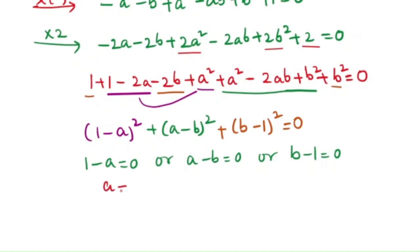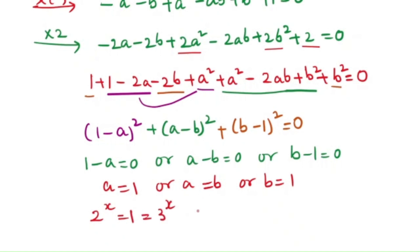This means a = 1, or a = b, or b = 1. Since a = 2^x and b = 3^x, for 2^x = 1, we use the rule that any number to the power 0 is 1, so 2^0 = 1, giving x = 0 as the only solution.